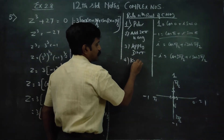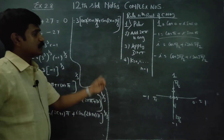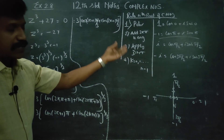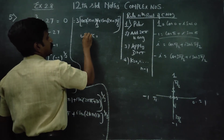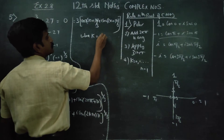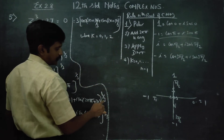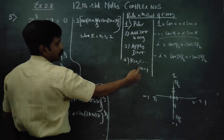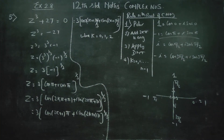After applying De Moivre's theorem, substitute k equal to 0, 1, and up to n minus 1. Since this is a cube root, n equals 3, so k takes values 0, 1, and 2. Substituting each value of k will give you the values of z.